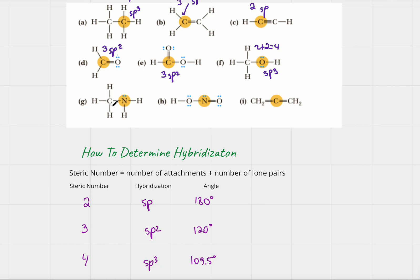This nitrogen is attached to one, two atoms and it has one lone pair. That means steric number is four, so hybridization is sp3.